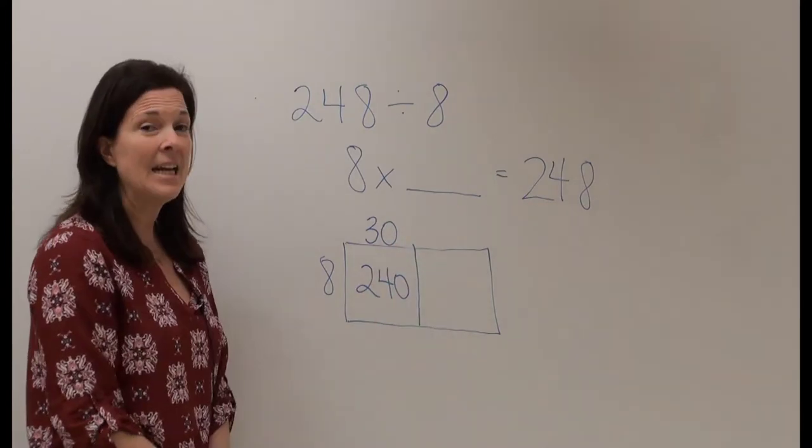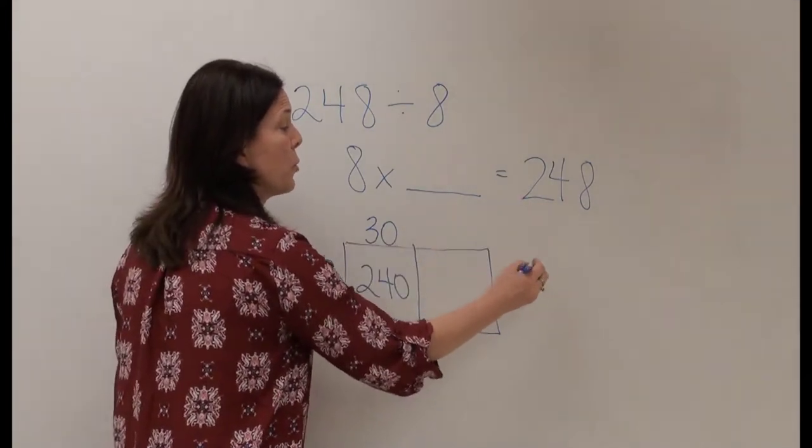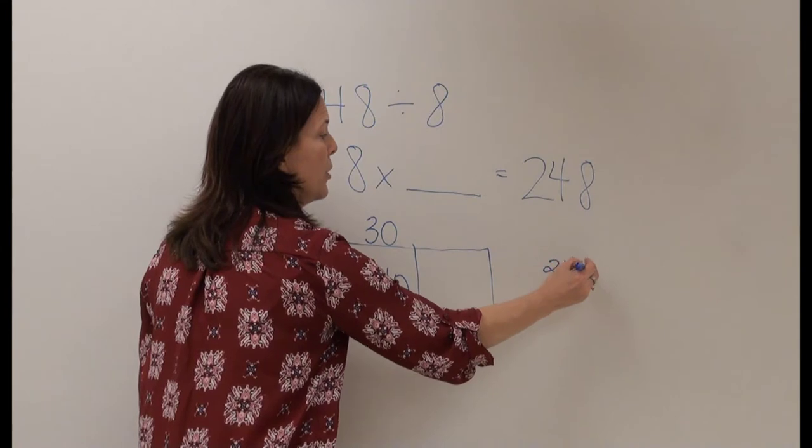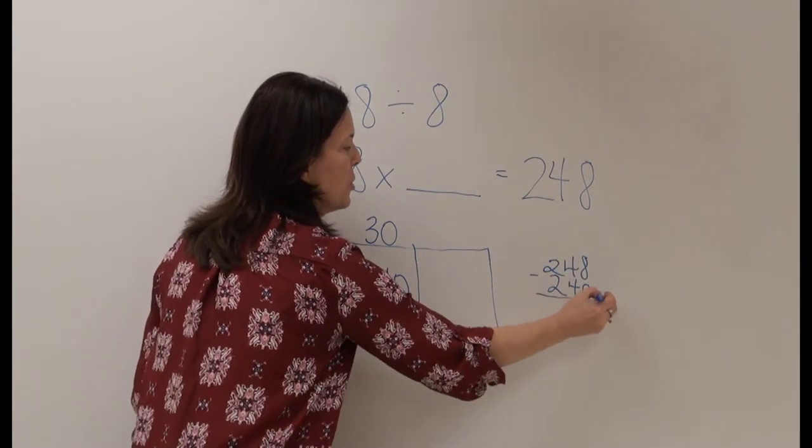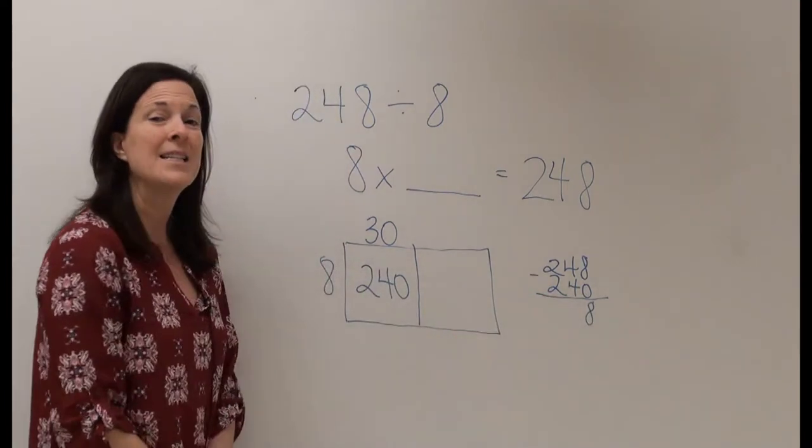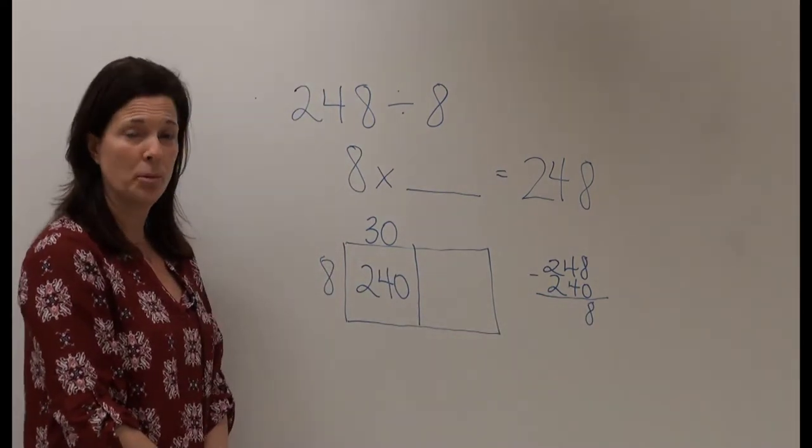I need to put 248 students in rows. So far I have placed 240. That means I have 8 students left to put into rows.